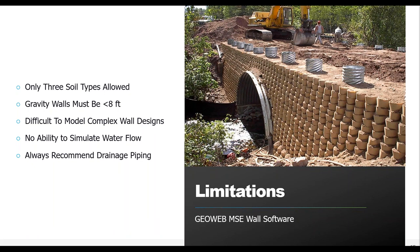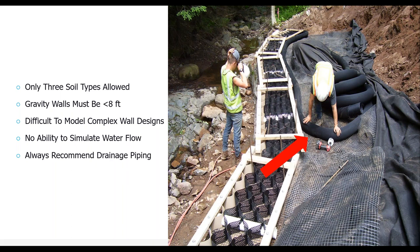One last thing before we're done — the limitations of this software. First, there are only three different soil properties that can be modeled, so if you anticipate many different material types, you need more advanced software such as RESA or RESLOP. Second, gravity walls are limited to a maximum of eight feet using this software. Third, if you are anticipating a complex wall design, this program may not be sufficient. Lastly and most importantly, the program cannot simulate water flow — it is simply not an option. For most walls this isn't a deal breaker since you're always using free-draining material, but you still need to install a drainage system such as a perforated pipe to collect and move water without damaging the wall.